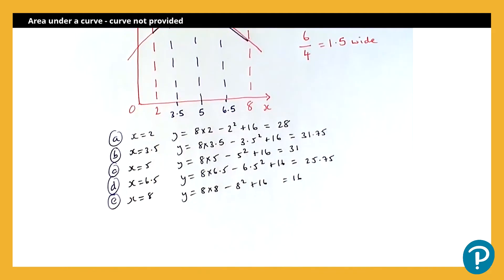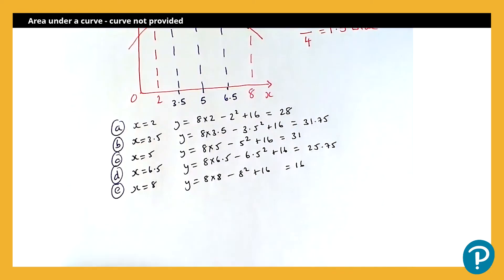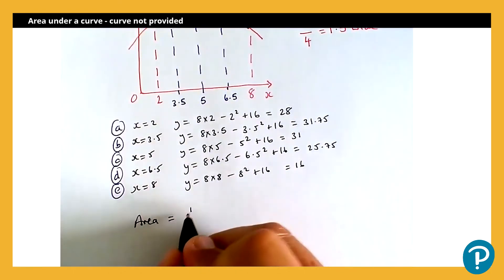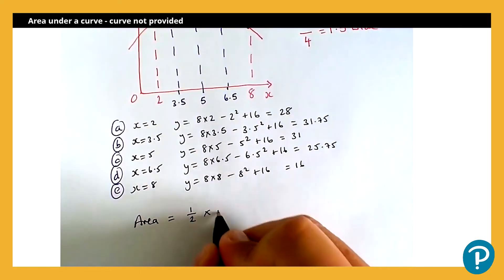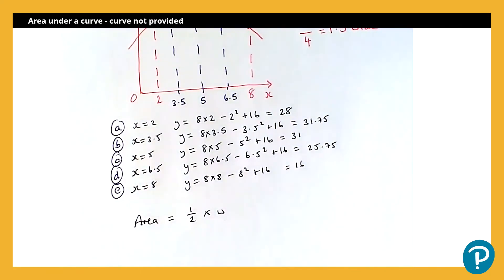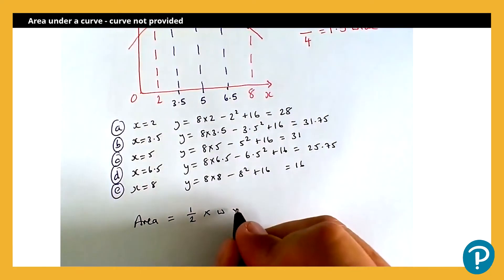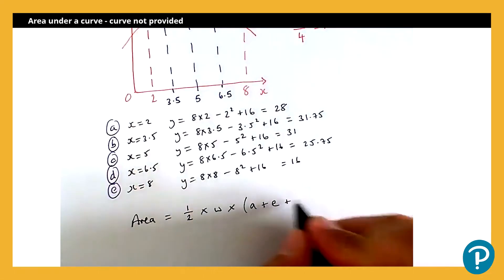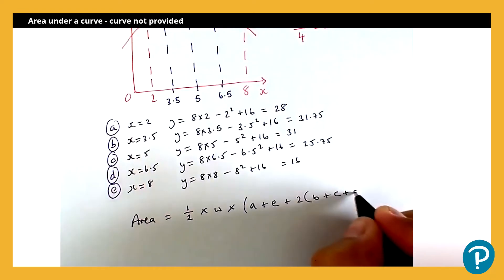Now, we then need to be able to state our trapezium rule to be able to use it. So trapezium rule states that the area is equal to a half multiplied by the width, so that's the width of each strip, multiplied by, and then we've got our n values, a and e, and then two lots of the middle values, b, add c, add d.